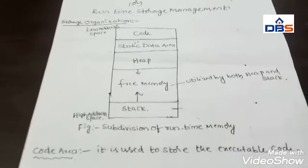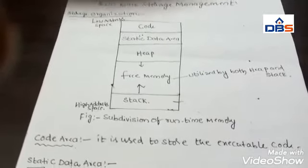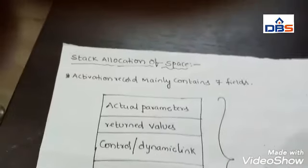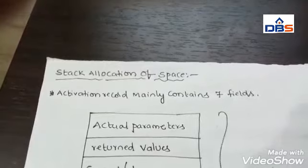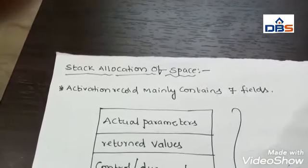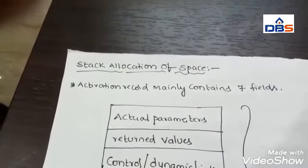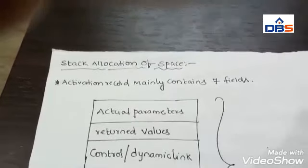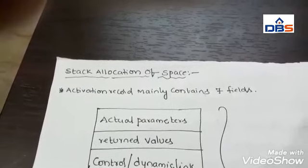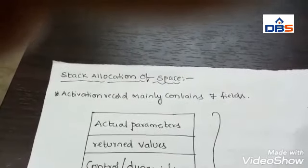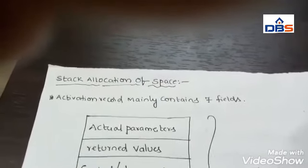These two data structures are used depending upon the situation. If there are too many functions or procedures, the stack is used more often and the free memory is utilized by the stack. If there are too many dynamic variables or pointer variables, the heap is used — majority of the free memory will be utilized by the heap area. This covers memory utilization and the subdivision of runtime memory into four major areas: code area, static data area, heap area, and stack area. Coming to stack allocation of space — almost all compilers for languages that use procedures, functions, or methods manage at least part of their runtime memory as a stack. Each time a procedure is called, space for its local variables is pushed on the stack, and when the procedure terminates, that space is automatically popped off the stack.